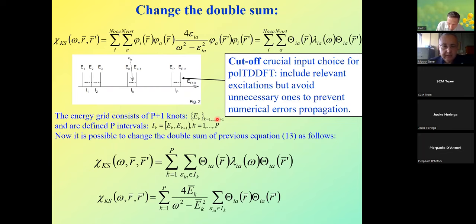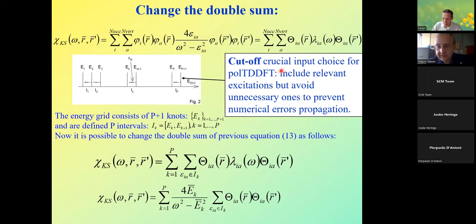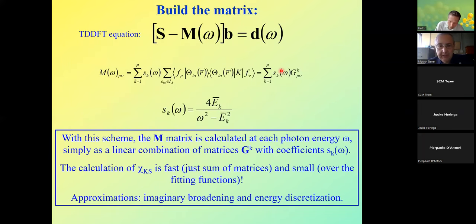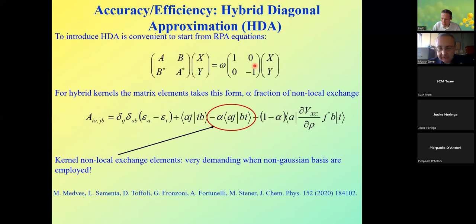If the cutoff is too high, you accumulate errors; if too low, you exclude important contributions. This is a very important choice for the accuracy of the calculation. At the end, the matrix can be built and the full spectrum extracted. This was just an abstract overview of the PolTDDFT method.